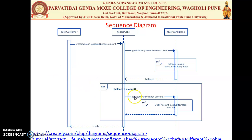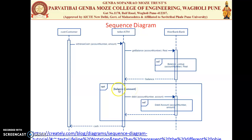In the ATM example, which demonstrates fragments, the customer provides an account number and amount. The ATM checks the balance with the bank, and the bank looks up the balance. A fragment checks the condition: if the balance is greater than the withdrawal amount, the bank debits the customer's account and returns confirmation to the ATM, which then confirms to the customer.